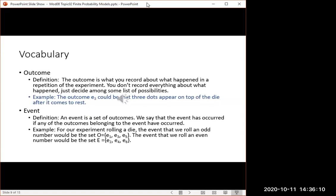The outcome of an experiment is what you record about what happened in one repetition of the experiment. For example, you roll the six-sided die once and you see how many dots appeared on top. The outcome E3 would be the outcome that three dots appeared on the top of the die.